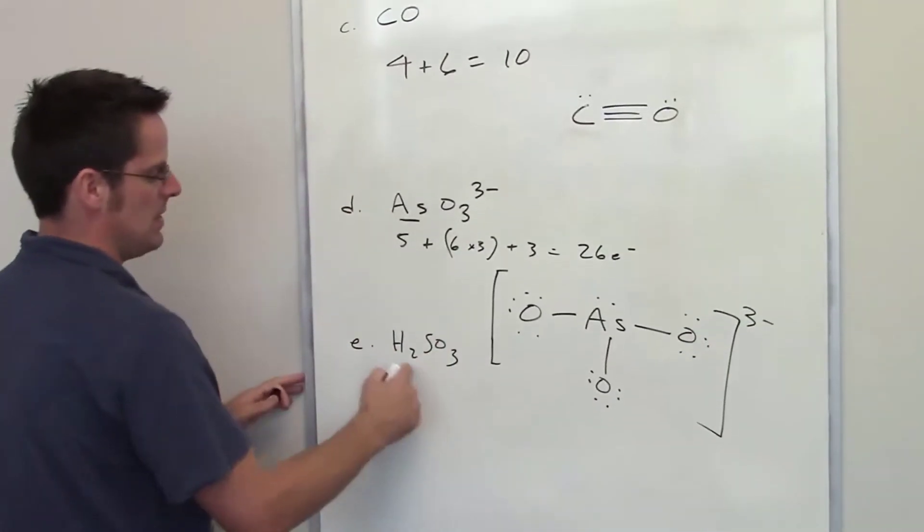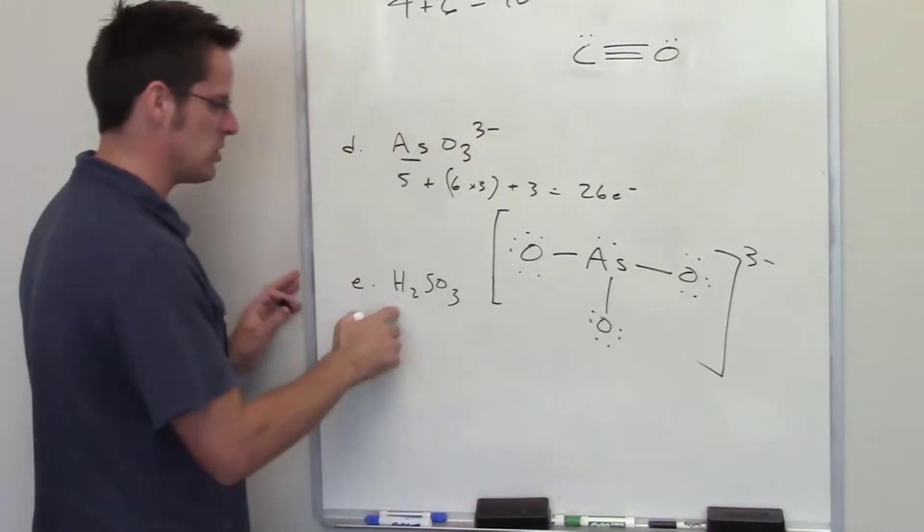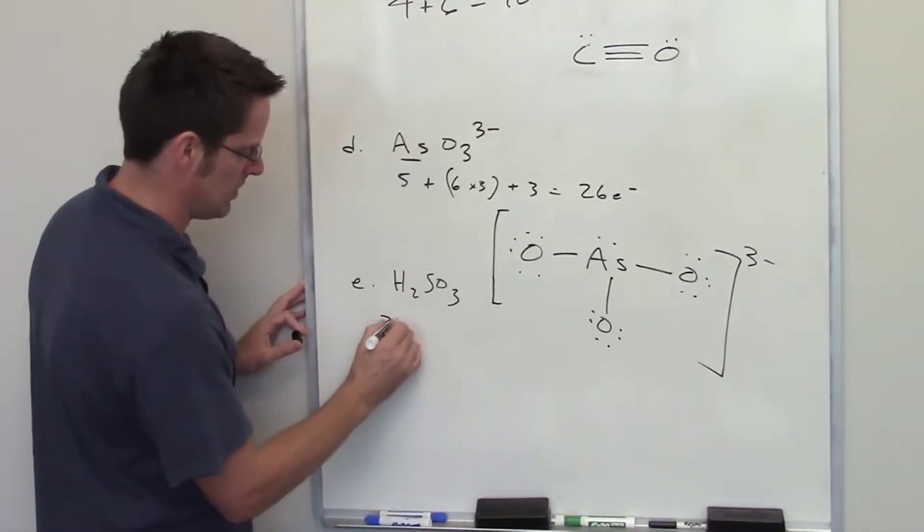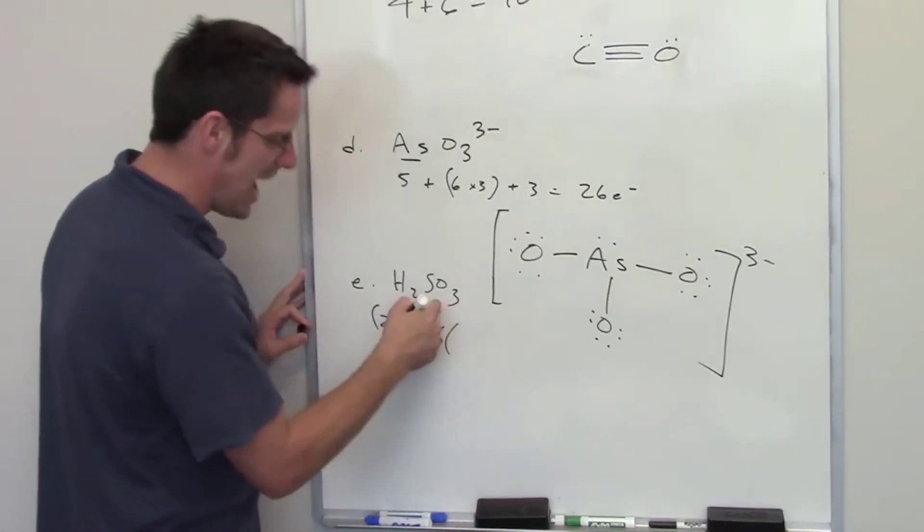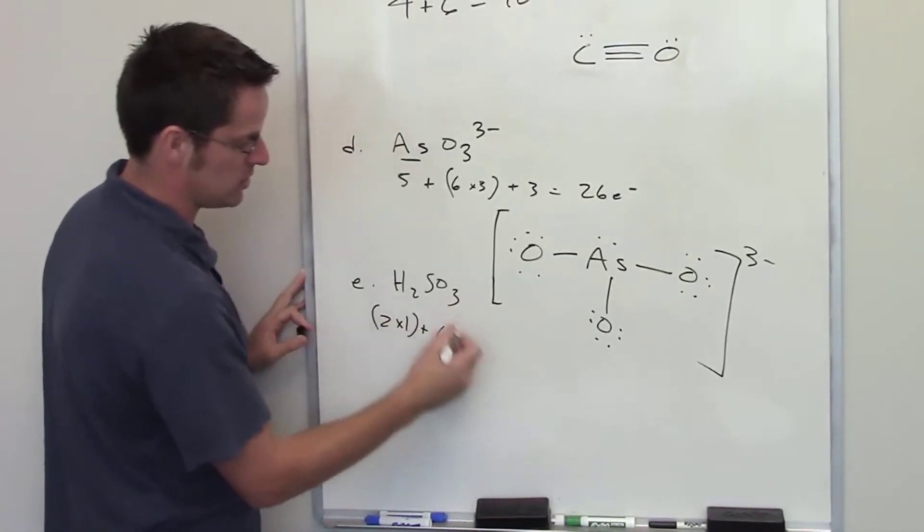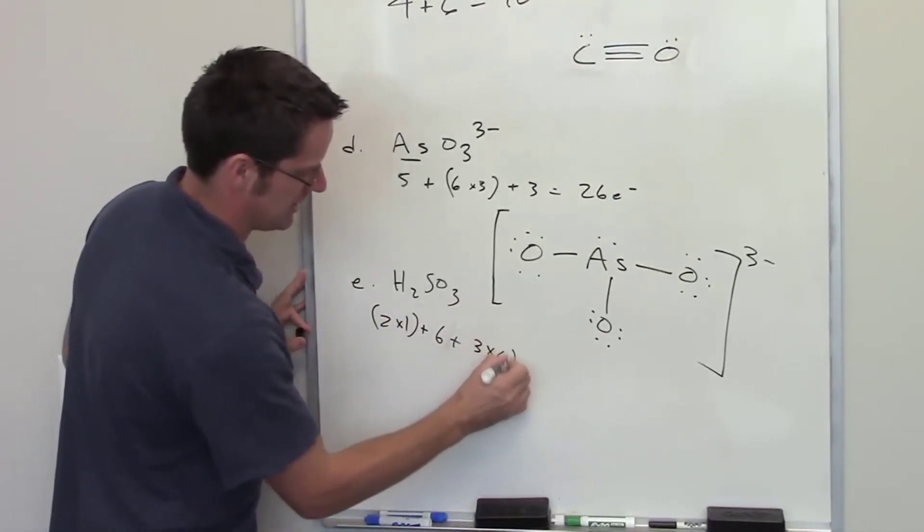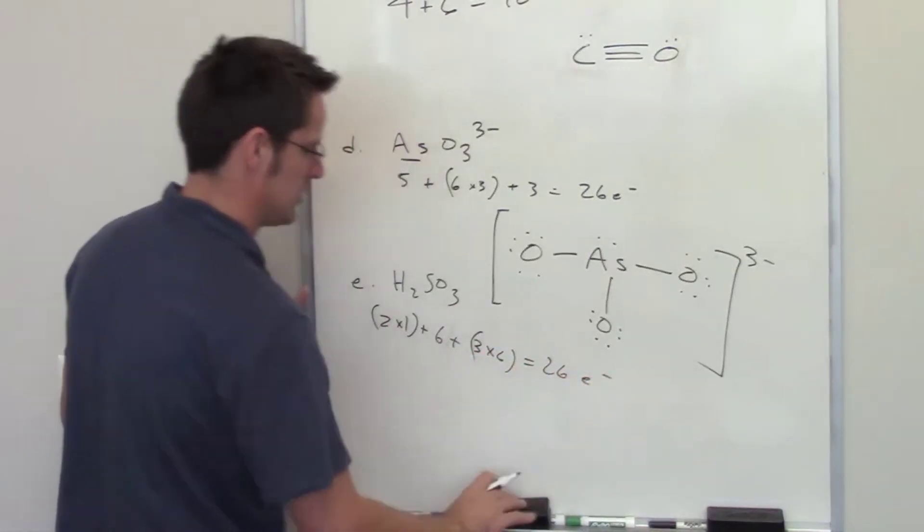Looking at this last one, I've got H2SO3. Count up the total number of valence electrons. Each hydrogen has one valence electron. There are two of them. Sulfur is in column 6A, so it has six electrons, as is oxygen. So I'm going to go ahead and there are three oxygens here, so I'm going to go 3 times 6. I add all of that up. That gives me 24 plus 2 is 26 electrons.